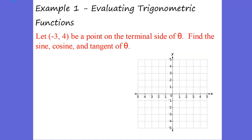Let's get to our examples. Example 1, we're going to take a look at trig function values. It says let negative 3, positive 4 be a point on the terminal side. Here's my reference point, my reference angle at 0 degrees. You can see at negative 3, we go negative 3 units and positive 4 units right here. We have negative 3 in our x, positive 4 in our y. If we do the Pythagorean theorem,